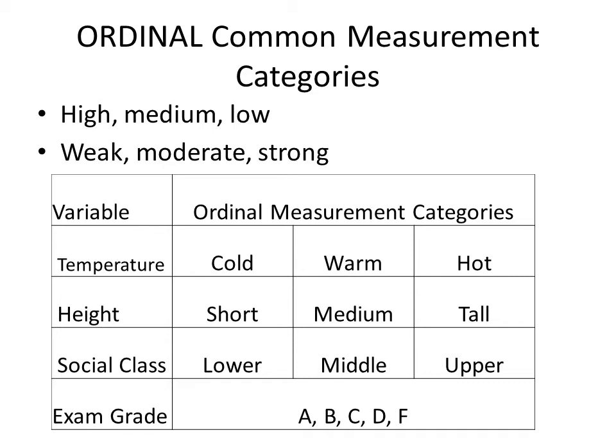Common ordinal measurement categories include high/medium/low, weak/moderate/strong, cold/warm/hot, short/medium/tall, and lower/middle/upper class. Exam letter grades are also ordinal — an A is higher than a D, but we don't know how much higher, since an A could be a 90, 91, 92, or 100. In ordinal measurement, we only know the letter, not the number.